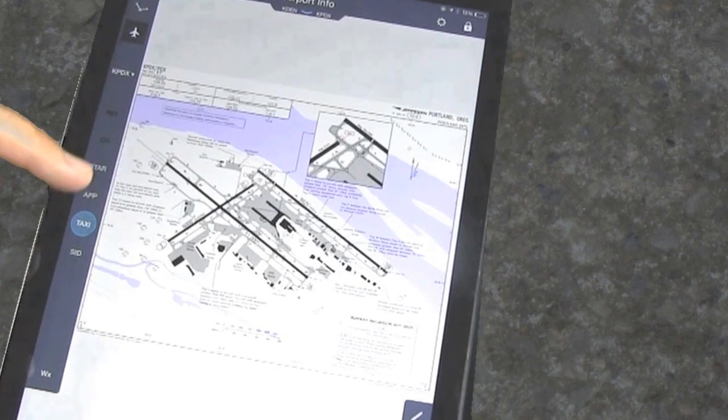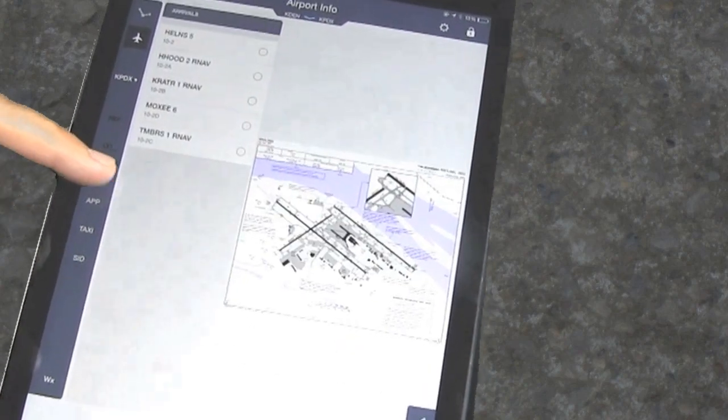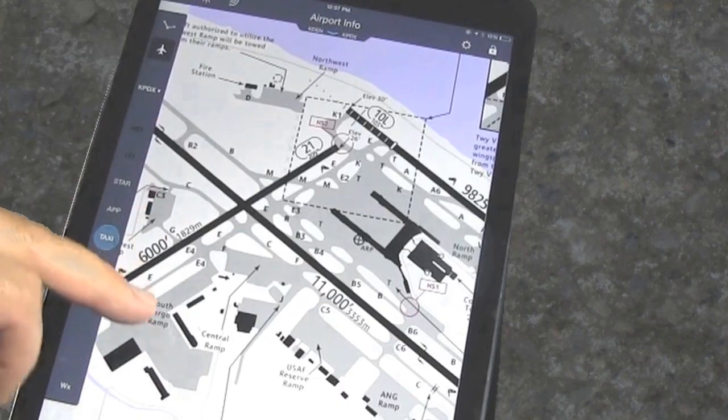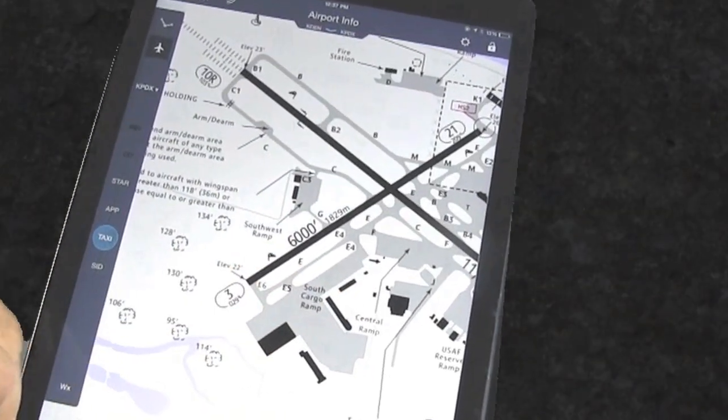You can get a flight deck demonstration at EAA AirVenture tent 301 to 303 or find out more at jeppesen.com.